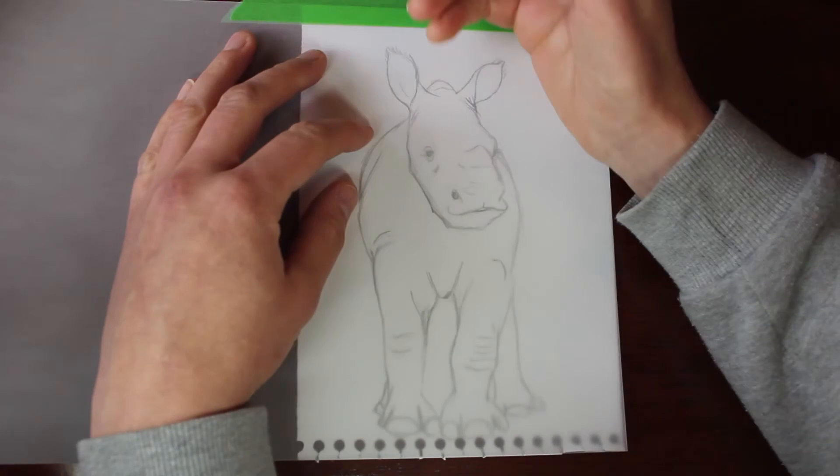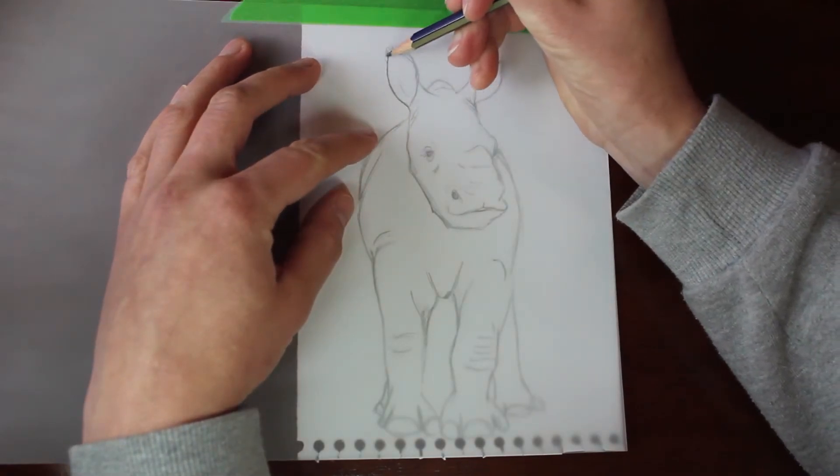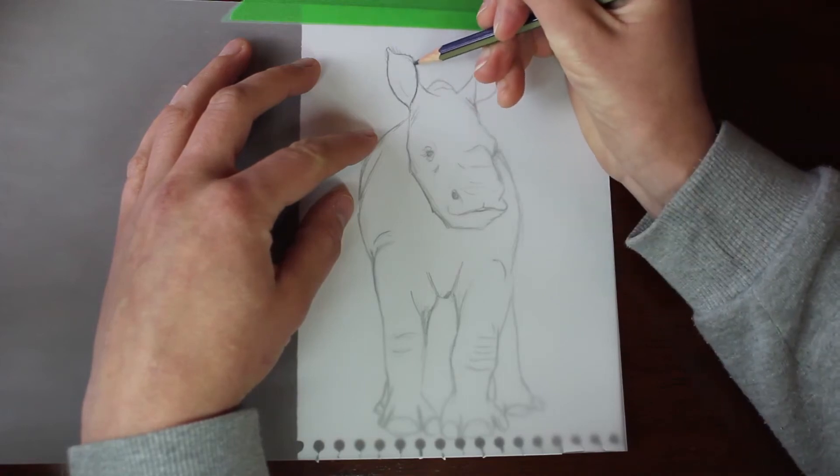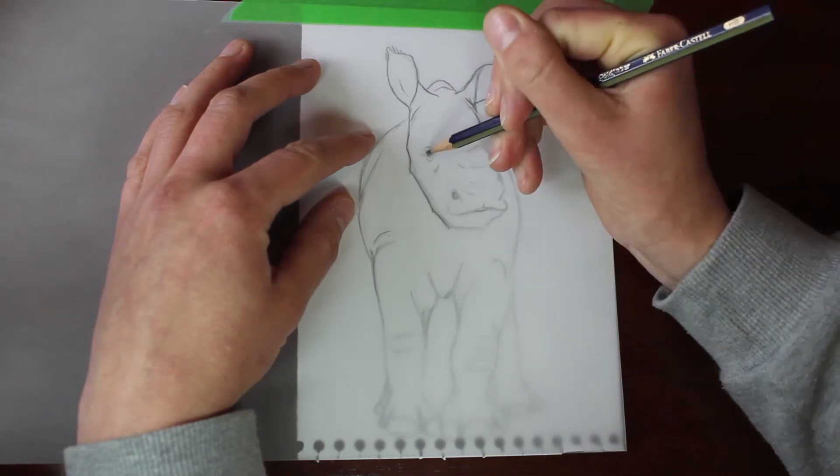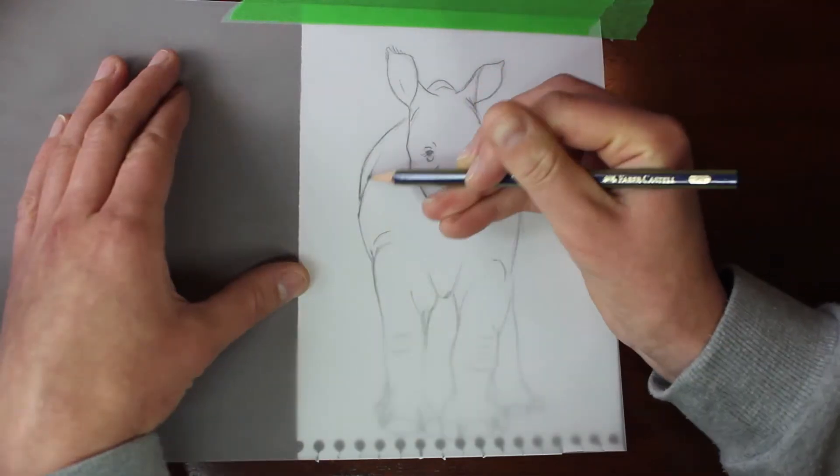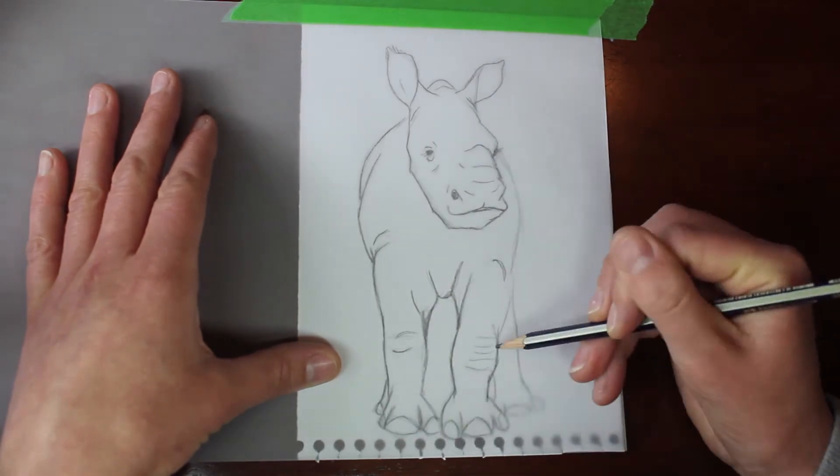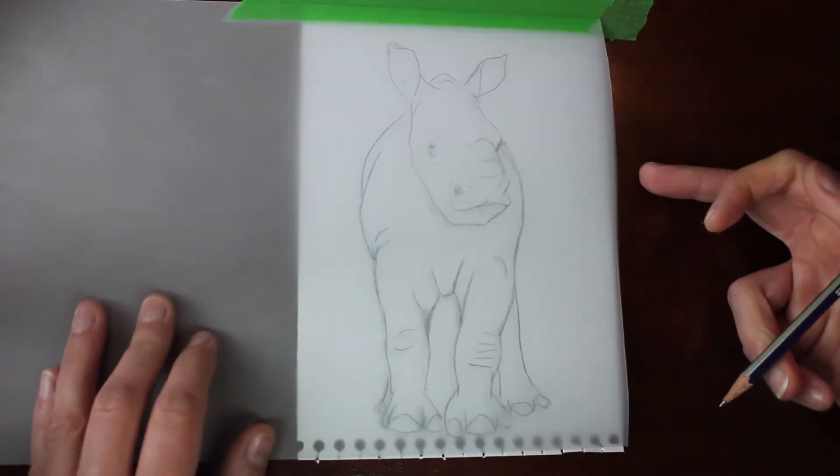So you want to tape your tracing paper down over the top of your sketch so that it doesn't move and just neatly trace over all the sketch lines that you want to keep. Do that nice and neatly because you want it to be as accurate as possible. Once you've got that done check you've covered all the lines and on to the next step.